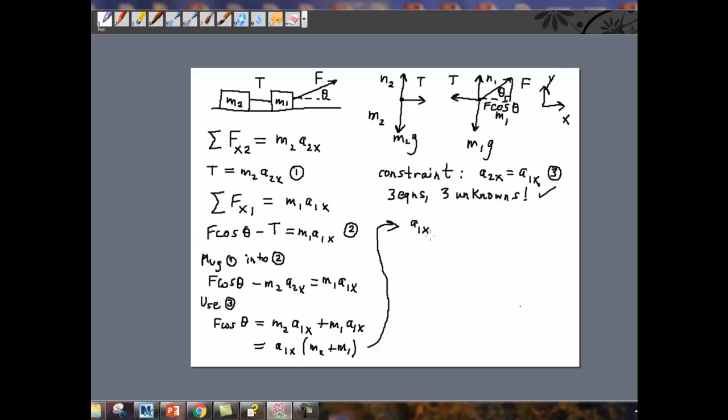And so I'm ready now to solve for the acceleration by dividing both sides by the sum of the two masses. So A1X, and of course it's the same as A2X, is F cos theta divided by M1 plus M2. It's got the right units. I can check that because force is in newtons, which is kilograms meters per second squared, divided by a mass, which is in kilograms. So this would have the right units. It would be meters per second squared. We can check that out. So that's good.